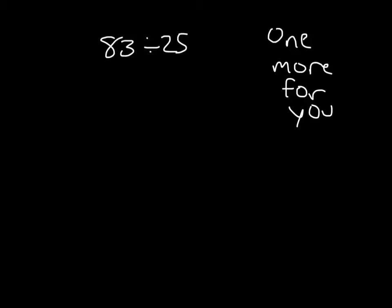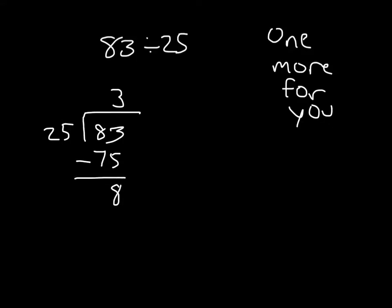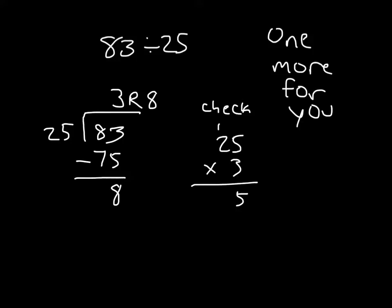Here's another one for you. Go ahead and set this up and solve. We have 83 divided by 25. 25 goes into 83 three whole times. 3 times 25 is 75; we subtract that and we get 8. So our remainder is 8. Running our check: we take 25 and multiply it by our quotient, which was 3. 3 times 5 is 15, regroup 1. 3 times 2 is 6, plus 1 is 7. We add back in our remainder to get 83 — so that matches.